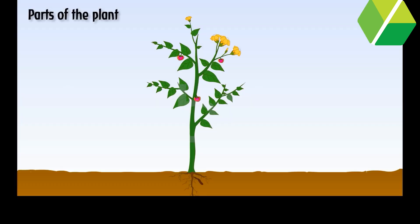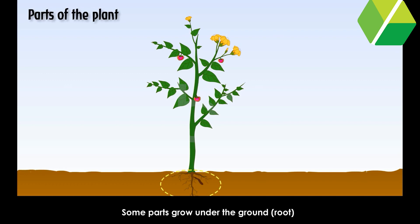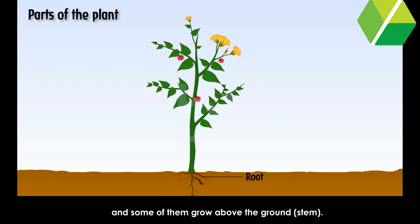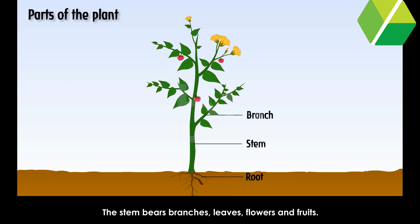Parts of the plant: A plant has many parts. Some parts grow under the ground, such as the root. And some of them grow above the ground, such as the stem. The stem bears branches, leaves, flowers and fruits.